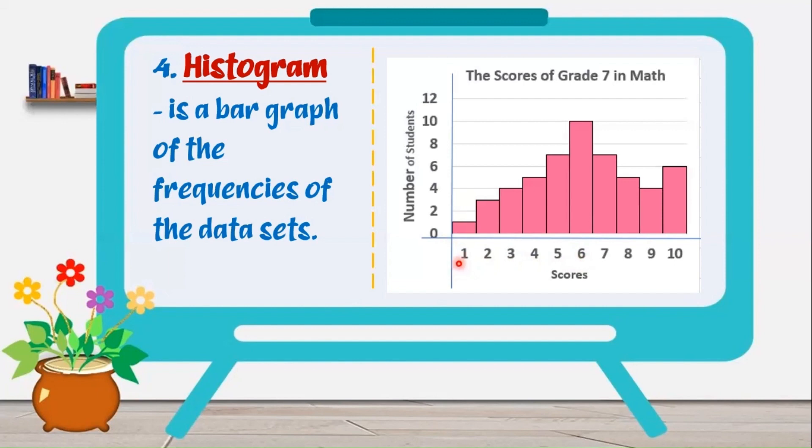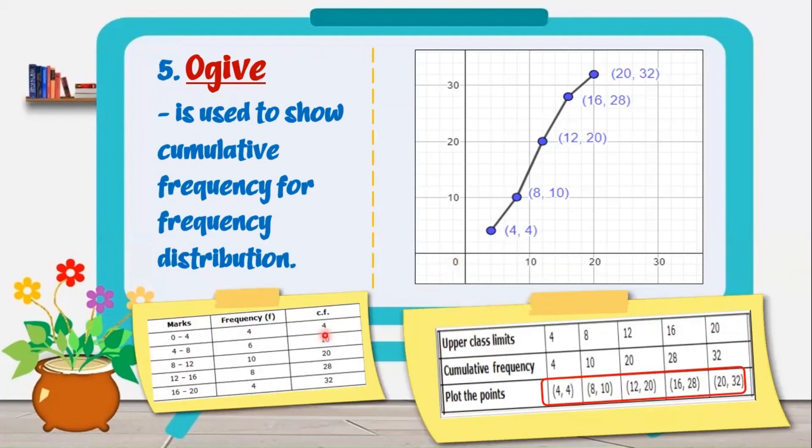Next is the ogive. It is used to show cumulative frequency for frequency distribution. We have already discussed making frequency distribution, and yes, it looks like here. We have the marks or the class intervals here and the frequency. For the ogive, because we need to have the cumulative frequency, we add a cumulative frequency column.